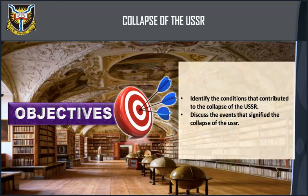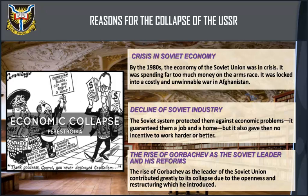Reasons for the collapse of the USSR: crisis in the Soviet economy. By the 1980s the economy of the Soviet Union was in crisis. It was spending far too much money on the arms race, and it was locked into a costly and unwinnable war in Afghanistan.